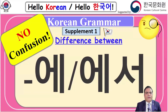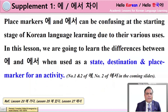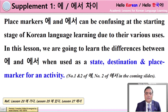Hello everyone and welcome to Supplement One of Hello Korean. In this supplement, we are going to understand the difference between the markers 에 (A) and 에서 (ESO). These are the learning objectives and we have to understand the difference between these two markers very clearly. These place markers can be confusing at the starting stage of Korean language learning due to their various uses. In this lesson we are going to learn the differences between 에 and 에서 when they are used as a state marker — meaning existence or non-existence — a destination marker, and a place activity marker.